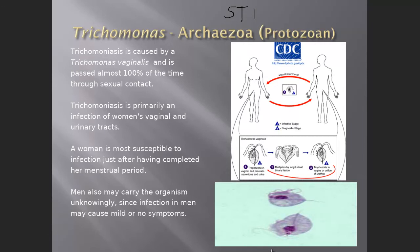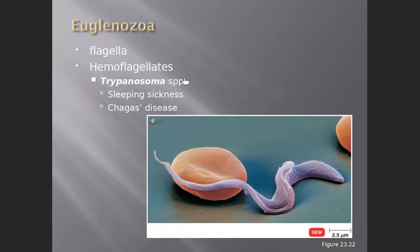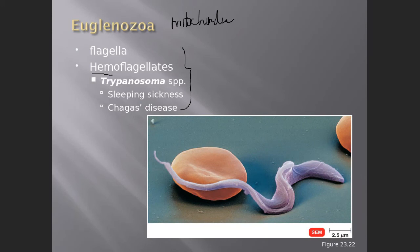The Euglenozoa — specifically the hemoflagellates — have flagella and also possess mitochondria, making them more evolved than the Archaeozoa. Hemoflagellates infect the blood. Two organisms of interest are Trypanosoma spp.: Trypanosoma brucei, which causes African sleeping sickness, and Trypanosoma cruzi, which causes Chagas disease.